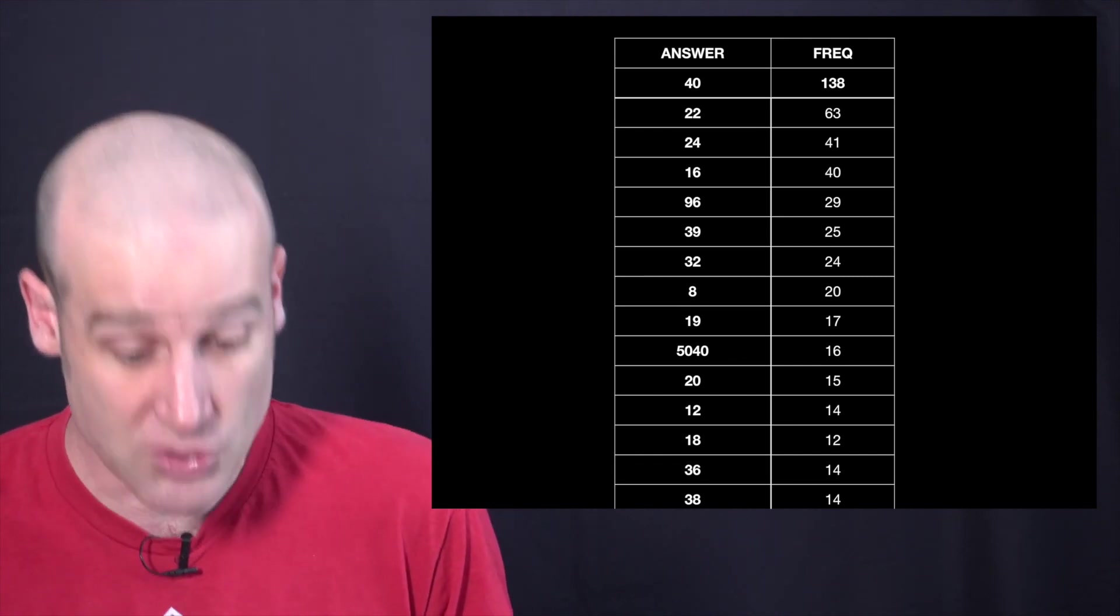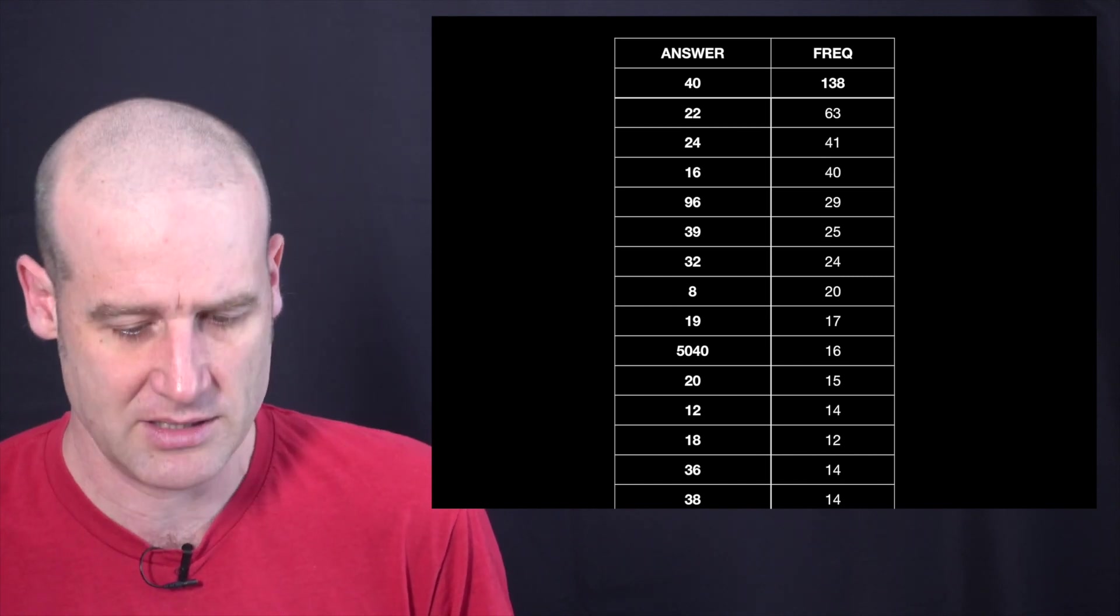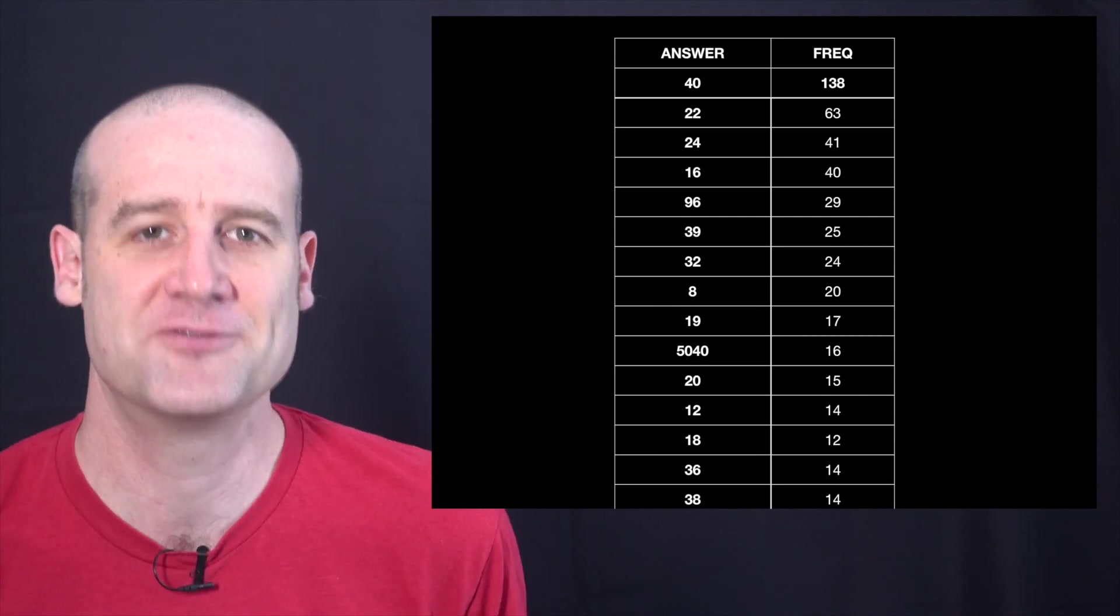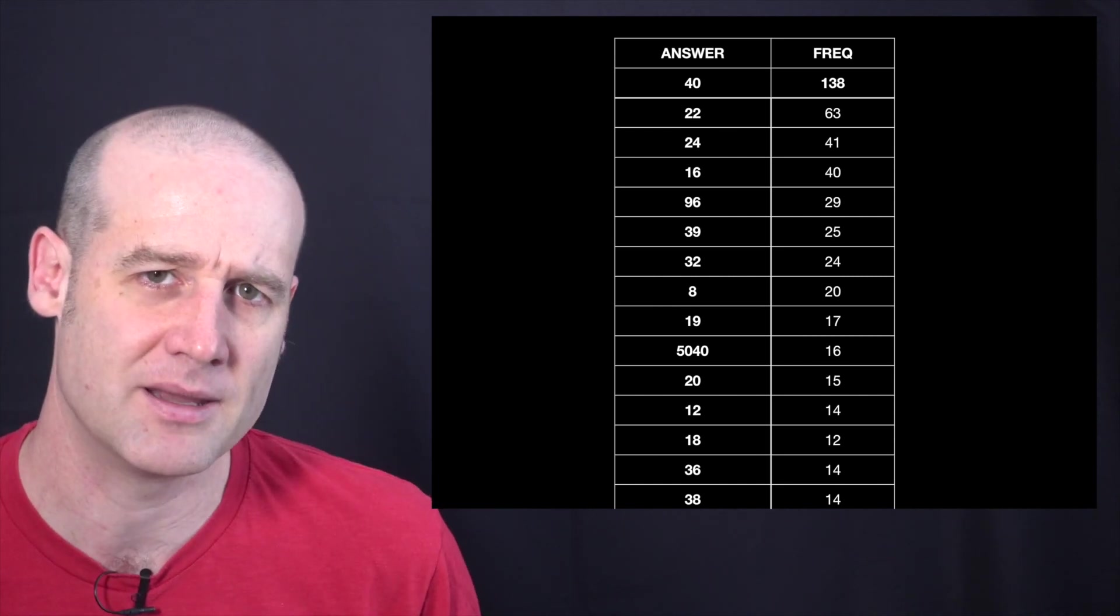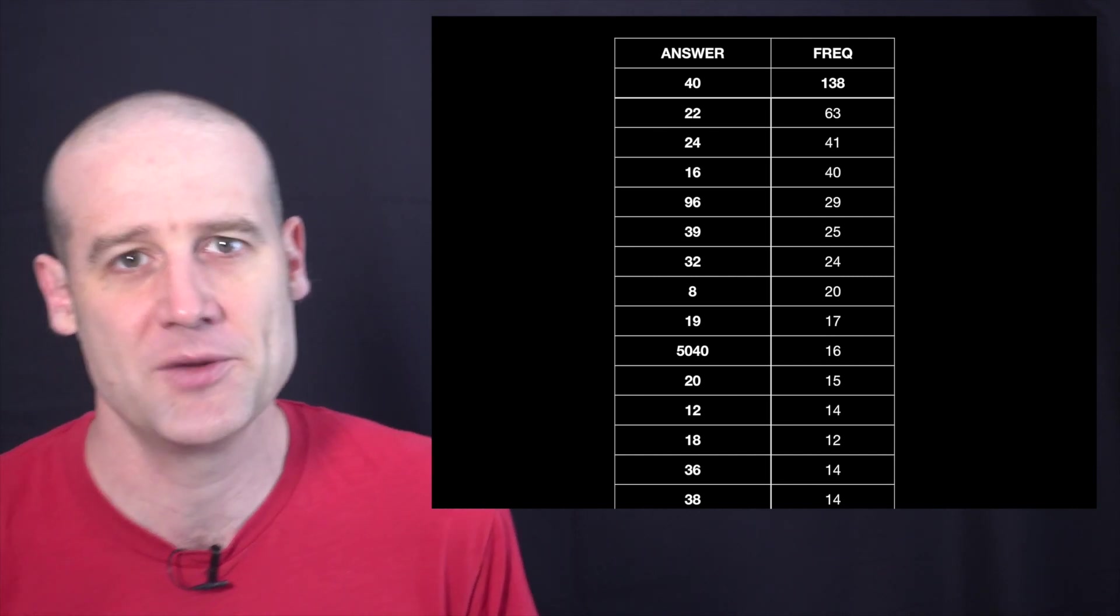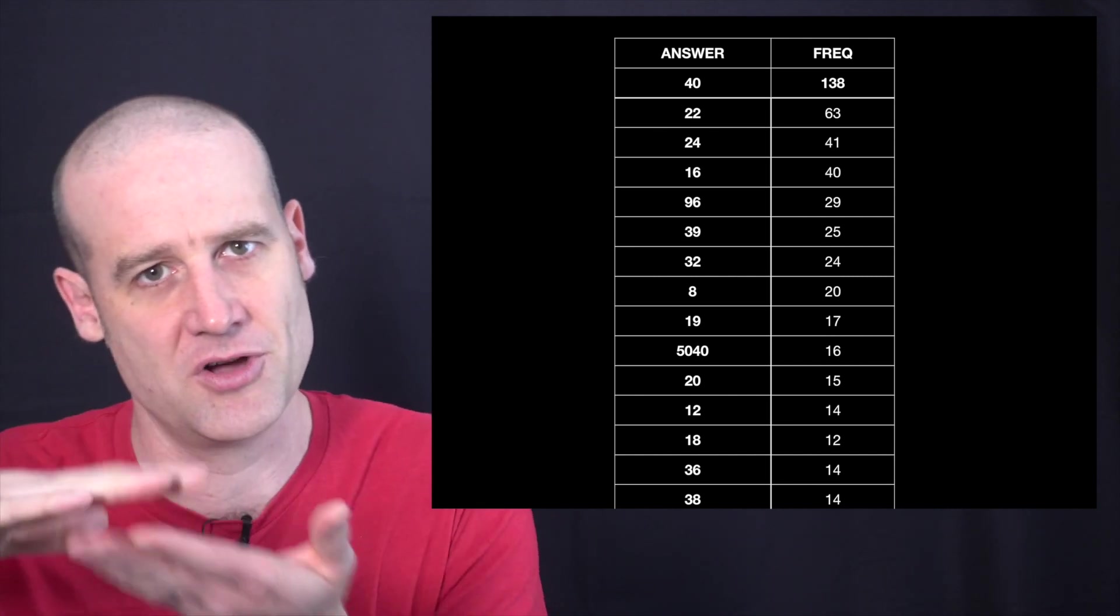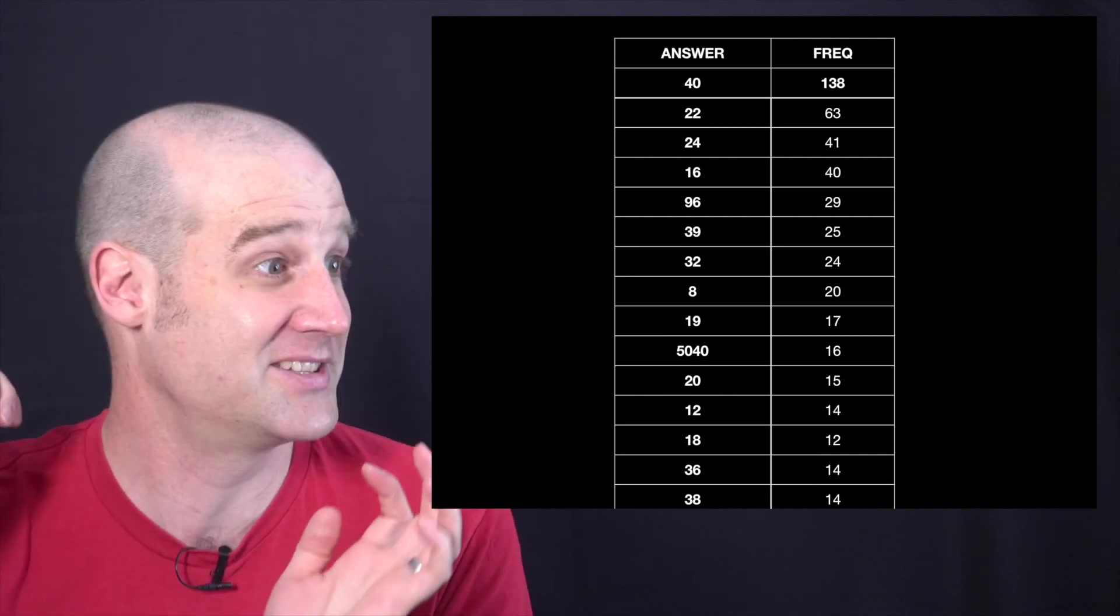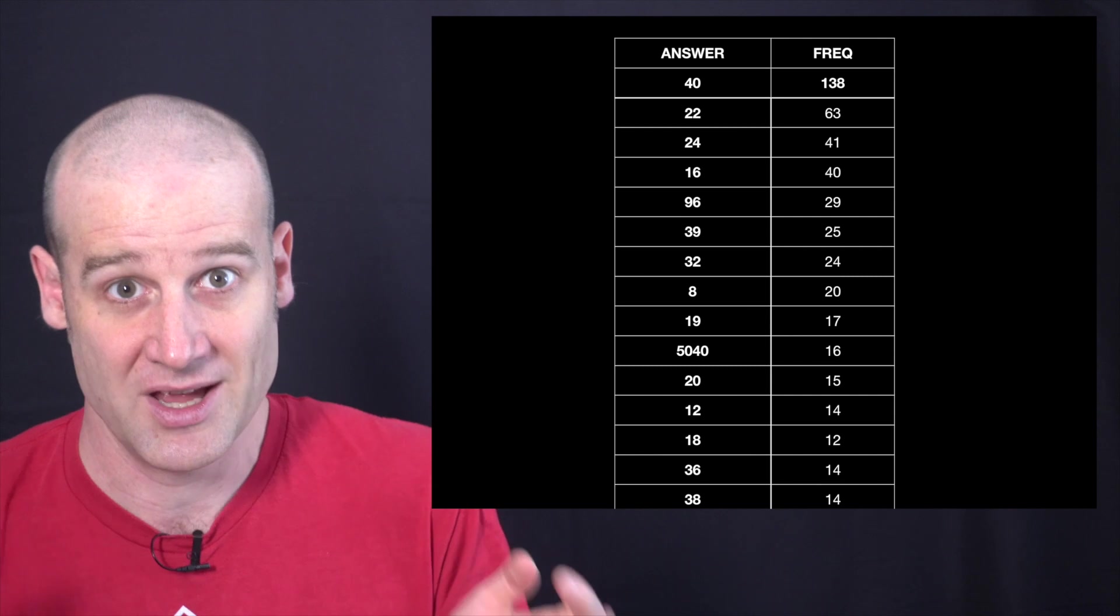The answer of 22 fold, 63 people sent that in. You can see 24 folds all the way down. So now 5040. You might be thinking that's a weirdly big number to have in there. That's just 7 factorial. So that's the people who went well you're gonna have A on the top and then you've got the other seven letters to make up all eight underneath. And that's the number of ways you can arrange seven letters.